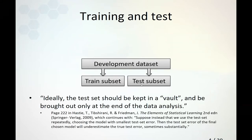The test data should ideally be kept in a vault and only brought out at the end of the data analysis. This is from a classical machine learning textbook by Hastie and others. They write that if we use the test set repeatedly, choosing the model with the smallest test error, then the test set error of the final chosen model will underestimate the true test performance — sometimes substantially. Evaluating tests multiple times results in a performance estimate that is not accurate.